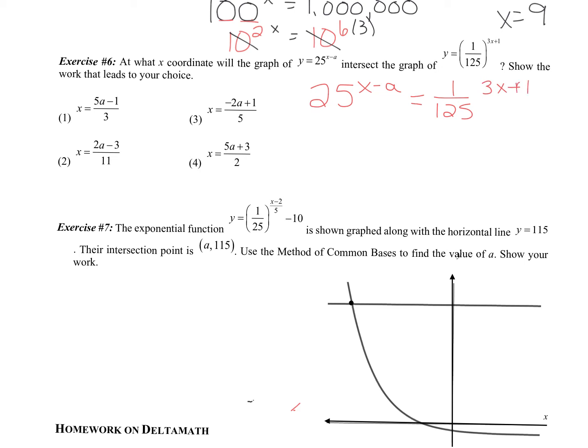So this is 25 to the x minus a equals 1 over 125 to the 3x plus 1. 25 and 1 over 125 have a common base of 5. So we'll have 5 squared to the x minus a. 1 over 125 is a fraction. It shows division, so we need a negative exponent. So we have 5 to the negative 3 to the 3x plus 1. So now we're ready to cancel common bases.